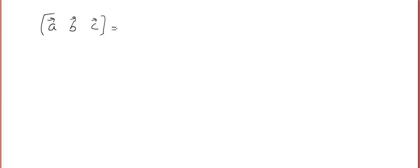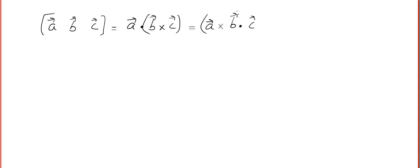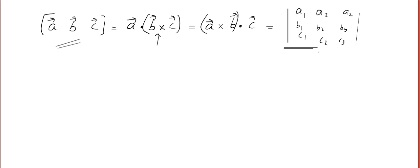The definition is straightforward: you write the three vectors and put one dot and one cross. You can put the dot and cross according to your convenience, but you have to work on the cross product first. The easiest way to evaluate an STP when vectors are given in component form is to find the determinant of the components: a1 a2 a3 / b1 b2 b3 / c1 c2 c3.